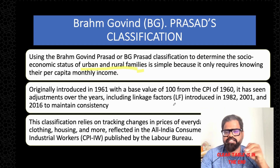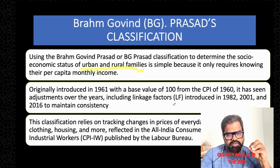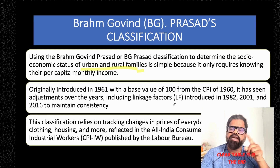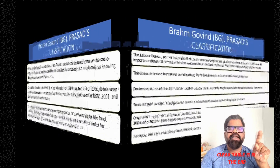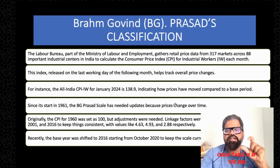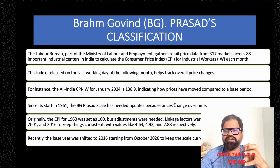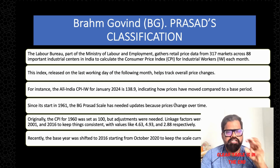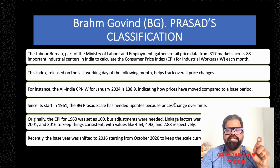Since it depends upon money and prices — changes in the price of food, clothing, housing, and other things we buy — what has been decided is that we will consider the All India Consumer Price Index for Industrial Worker, which is published by the Labour Bureau. The Labour Bureau is part of the Ministry of Labour and Employment, and they gather price data from approximately 317 markets across 88 important industrial centers in India to calculate the CPI for Industrial Worker each month. The Labour Bureau releases this on the last working day of the following month.